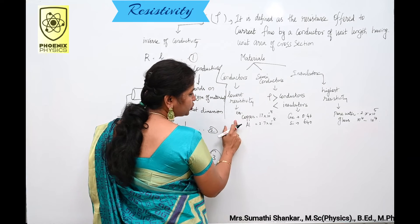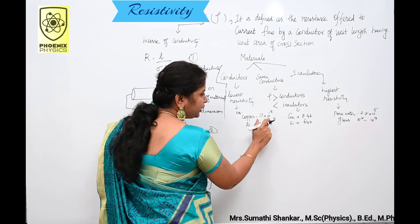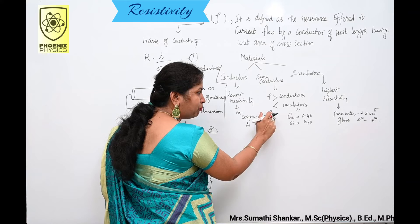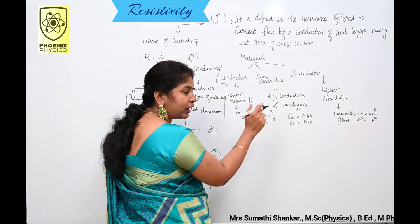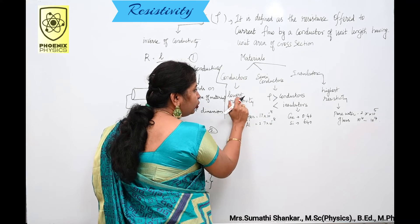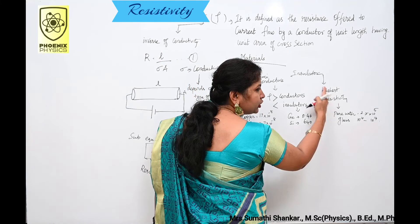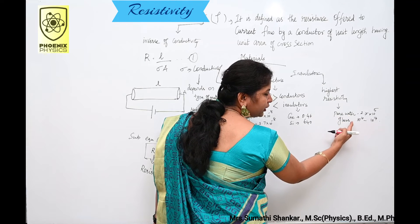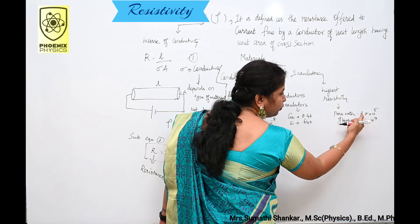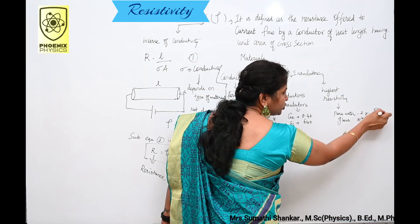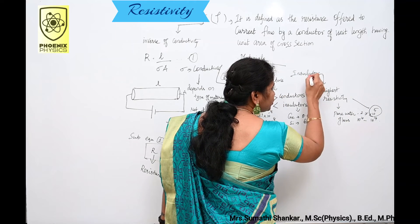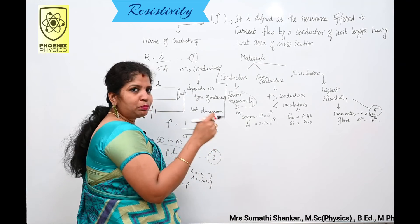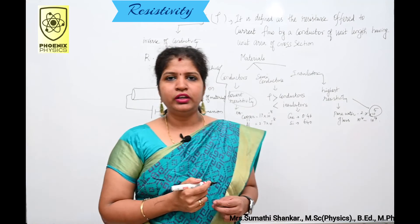Example for this conductor is copper and aluminium. Here we have 10 to the power of minus 8. Minus 8, that is why I said conductors have lowest resistivity. Insulators have highest resistivity. Example is pure water and glass. Here, 2.5 into 10 to the power of plus 5. That is why I said insulators have highest resistivity. Example for semiconductor is silicon and germanium.